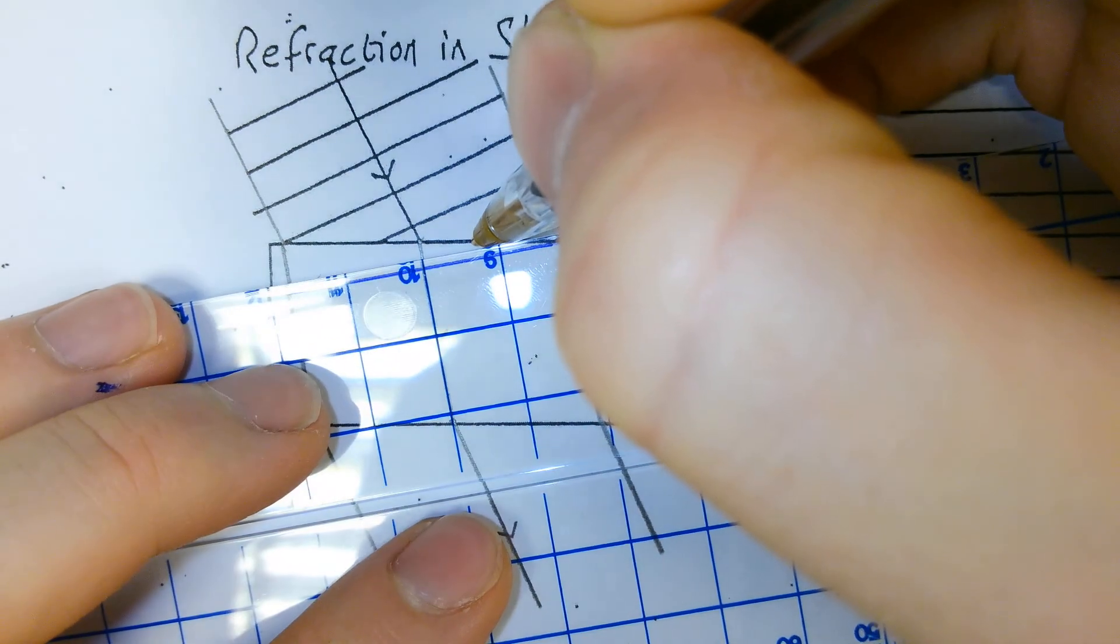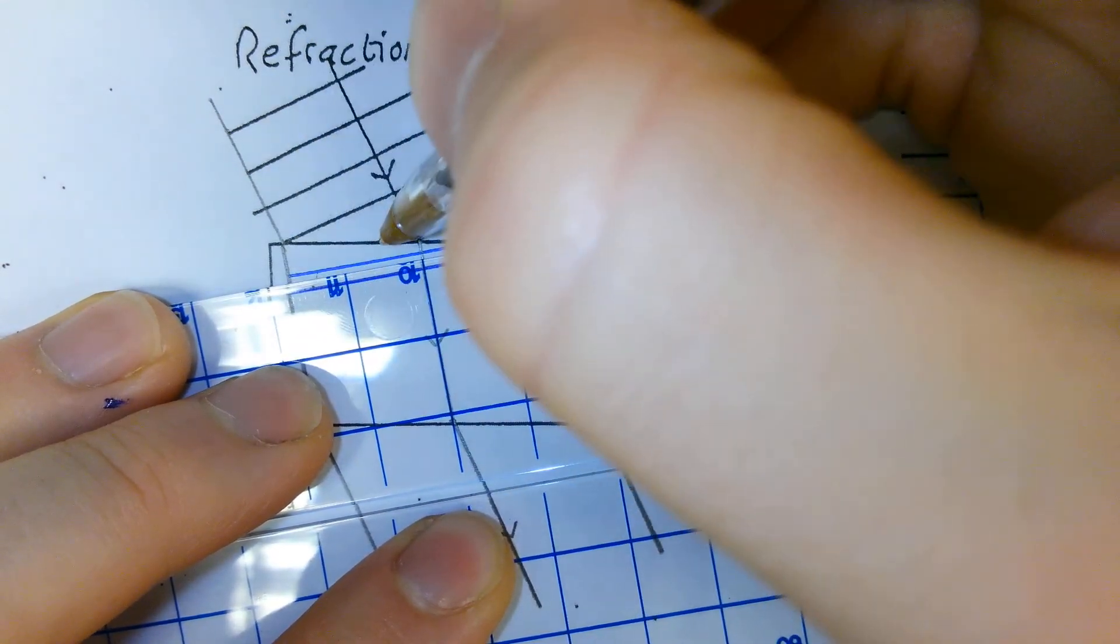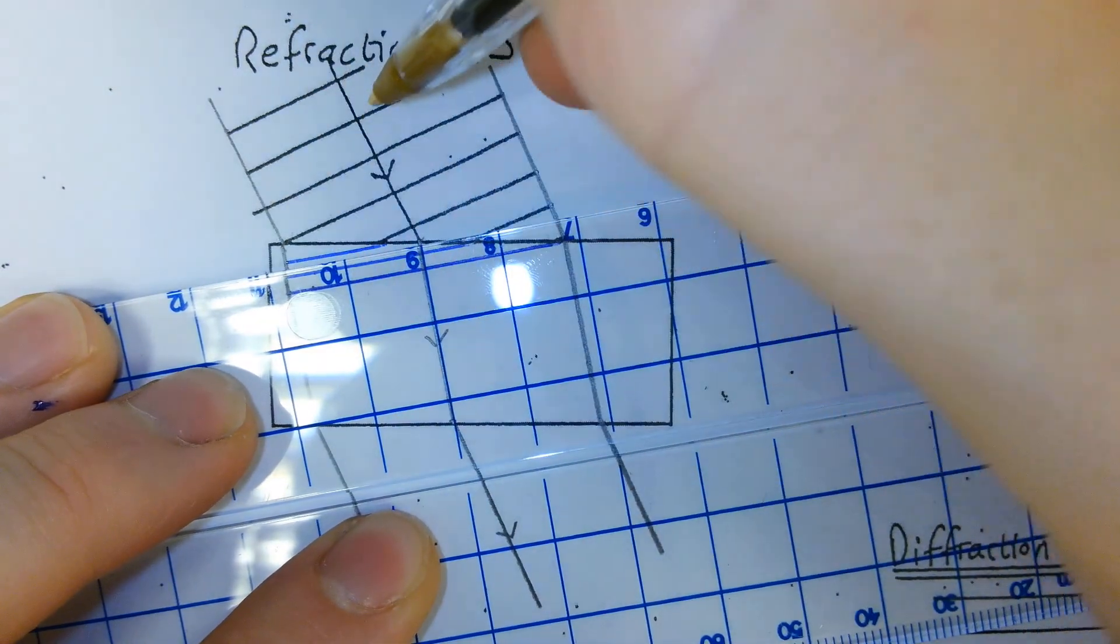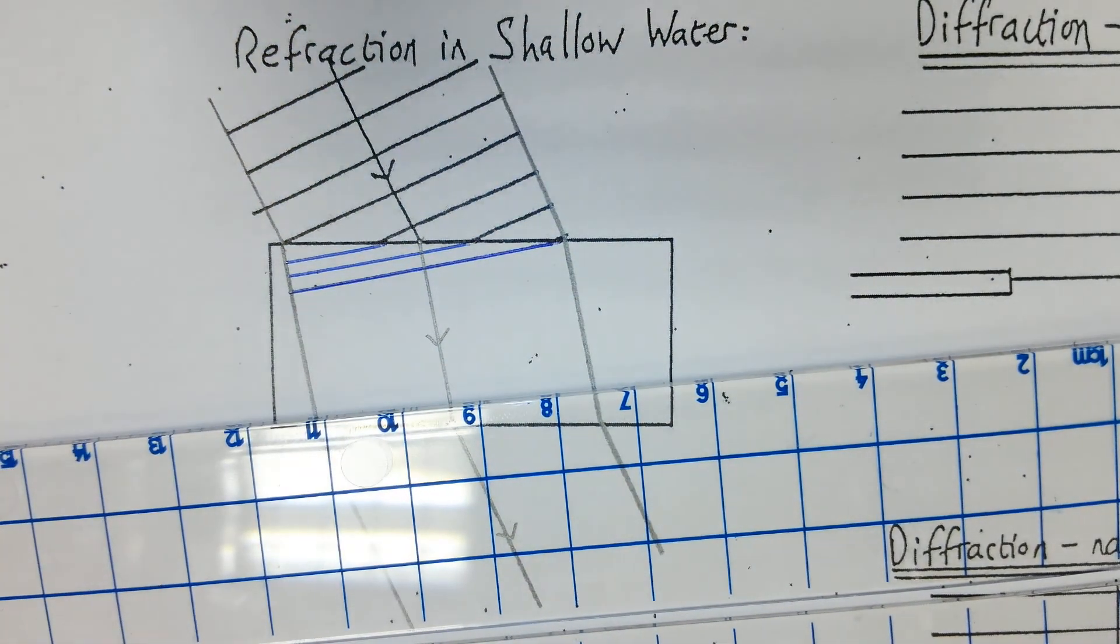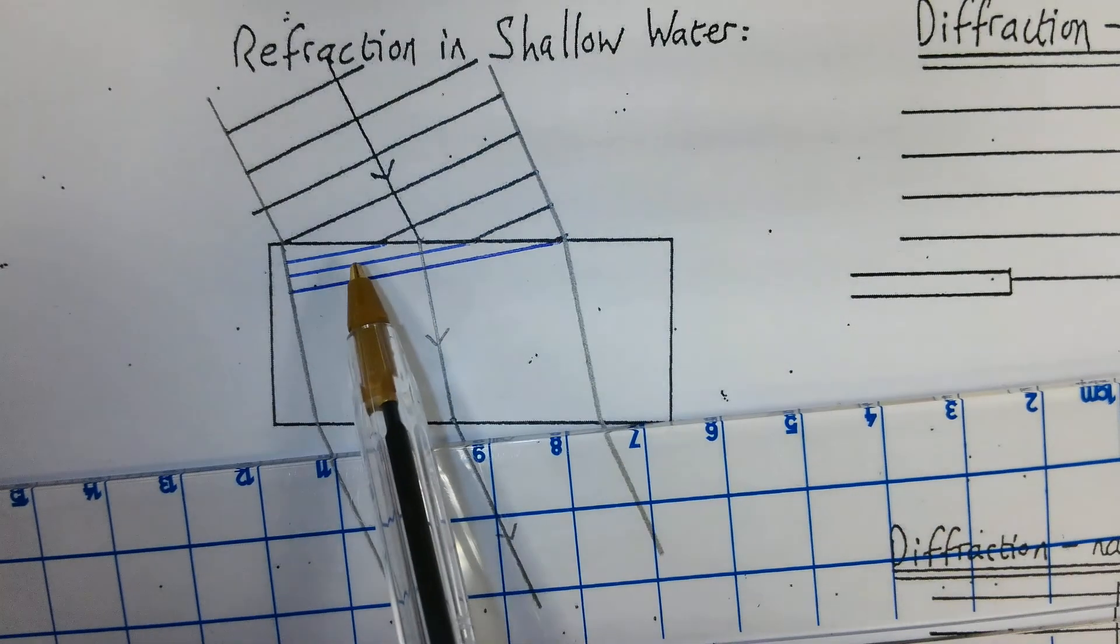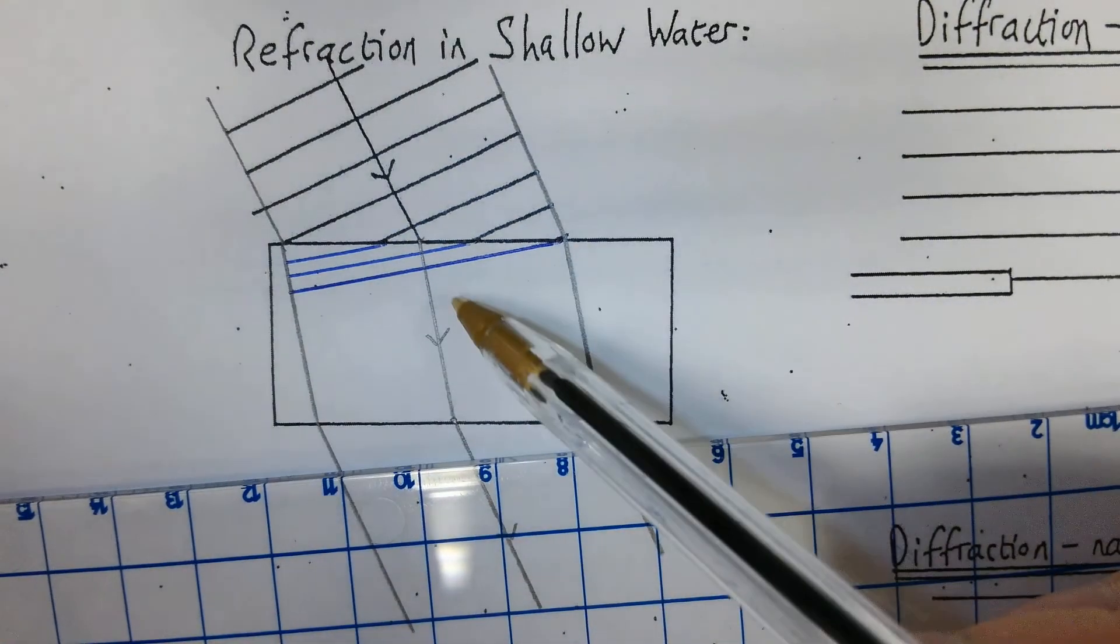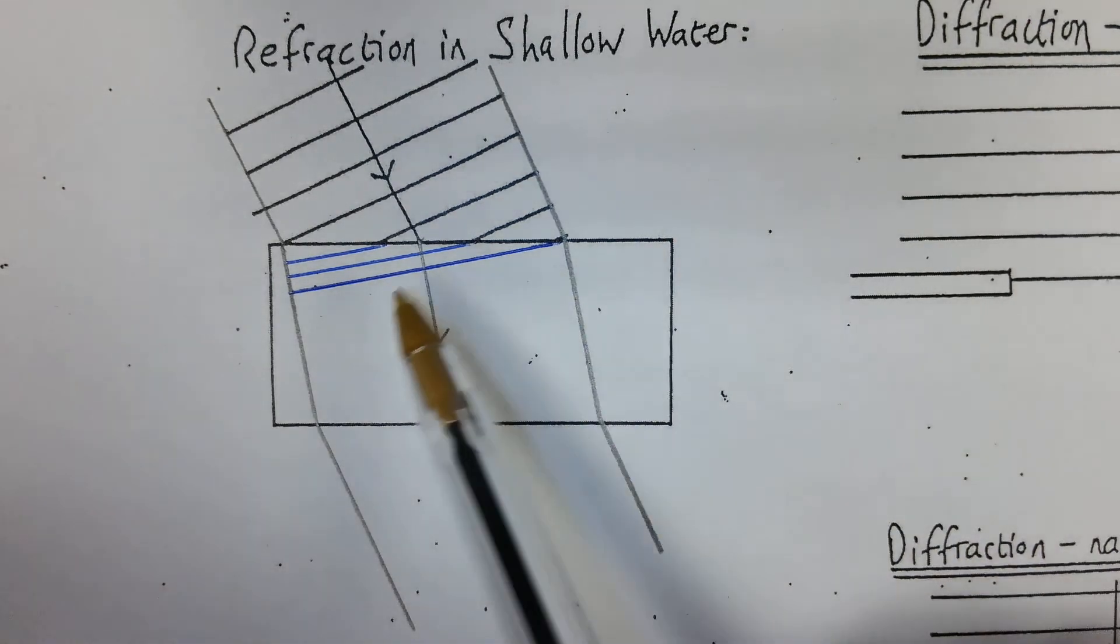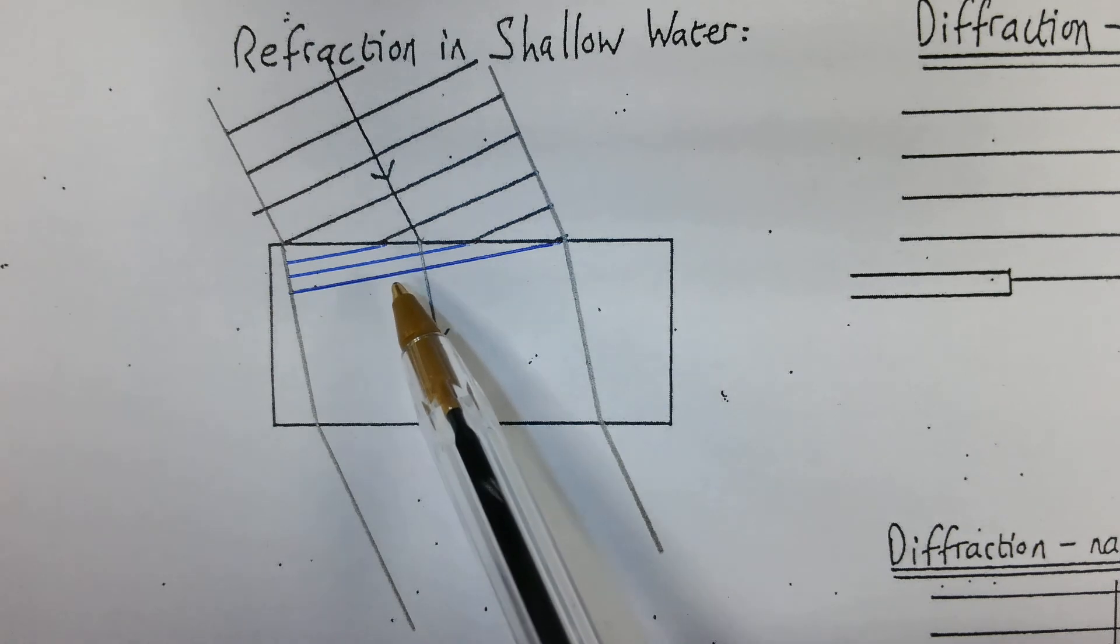I'll do the same with this one. Same with this one. There. So, I can see that as it's entered the shallow water, effectively the more dense, like it's going to a more dense area, the wave front to get them closer together.